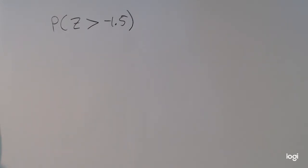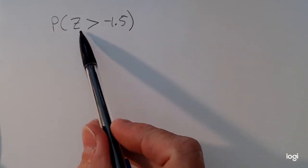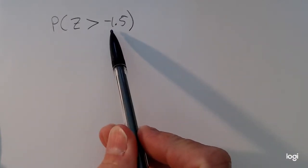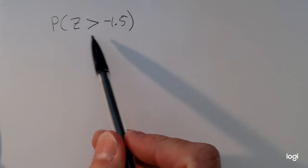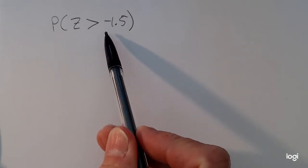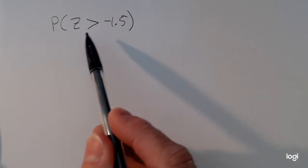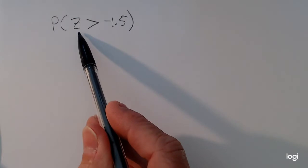I'm going to use the standard normal table to find the probability of getting a z-score greater than negative 1.5. This is also the area under the standard normal curve from z equals negative 1.5 to positive infinity.